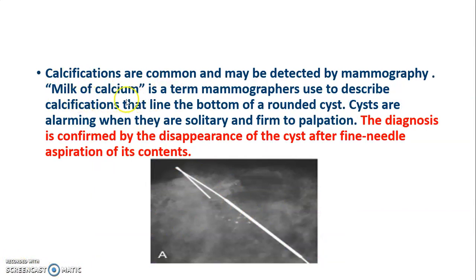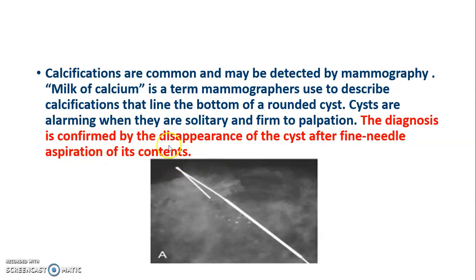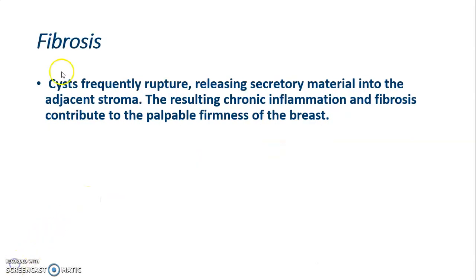Milk of calcium is a term mammographers use to describe calcifications that line the bottom of rounded cysts. When cysts are solitary and firm to palpation, they are alarming. The diagnosis is confirmed by disappearance of the cyst after fine needle aspiration of its content. When cysts rupture, they release secretory material into the adjacent tissue, resulting in chronic inflammation and fibrosis, which leads to palpable firmness of the breast.